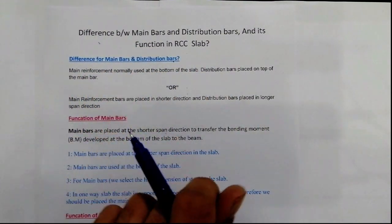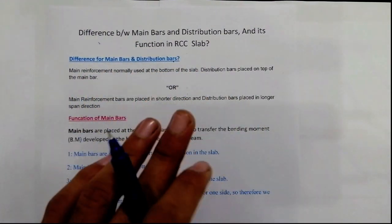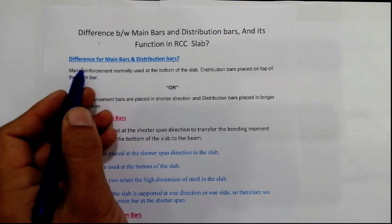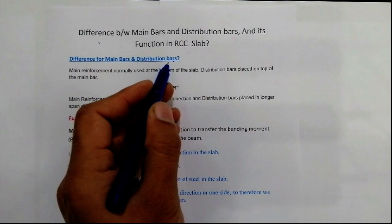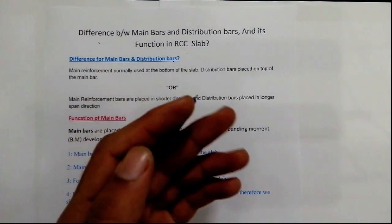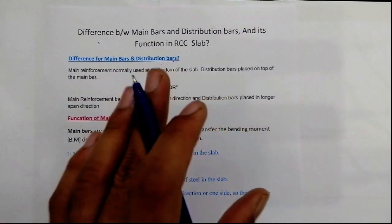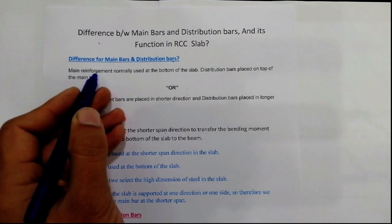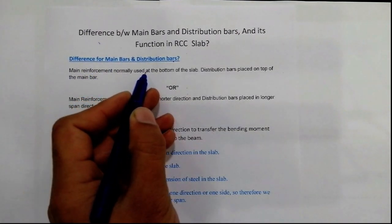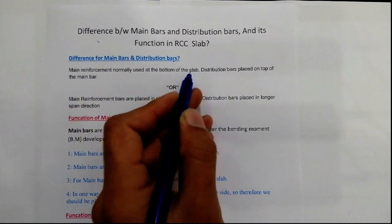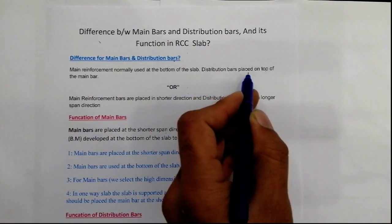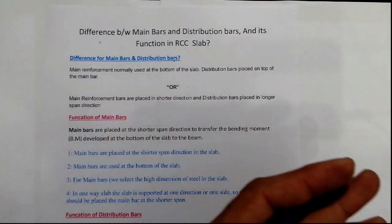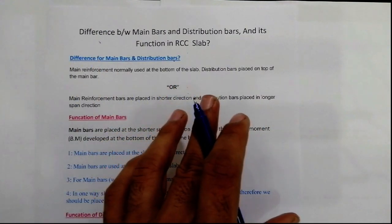If this video is helpful for you, please like this video and subscribe the channel for more civil engineering updates. So the first one is: what is the difference between main bars and distribution bars? Main reinforcement or main bars are normally used at the bottom of the slab, and distribution bars are placed on top of the main bars.